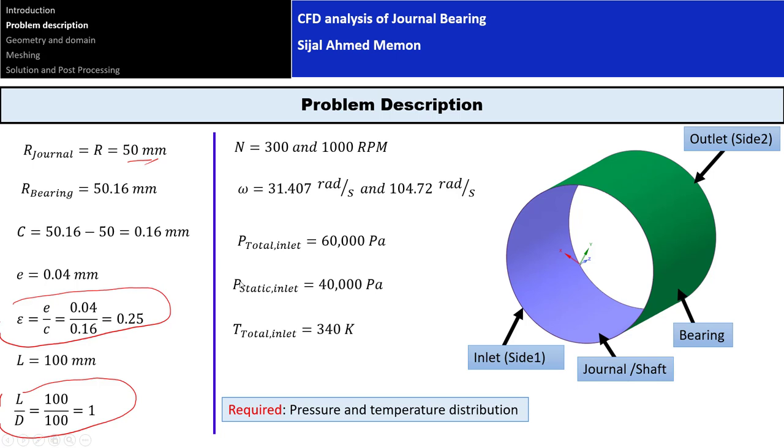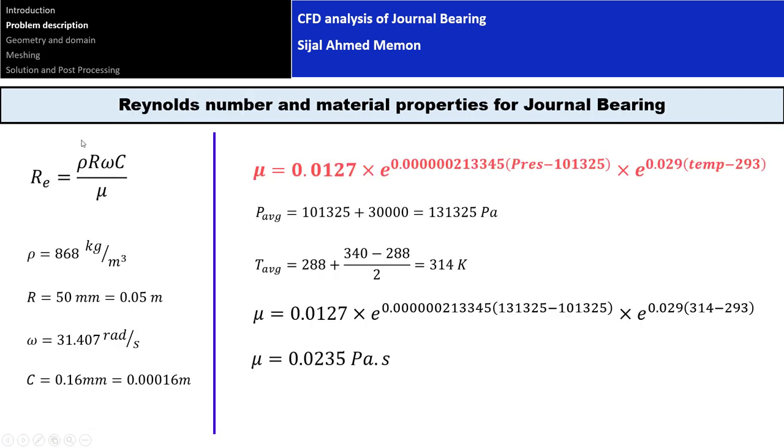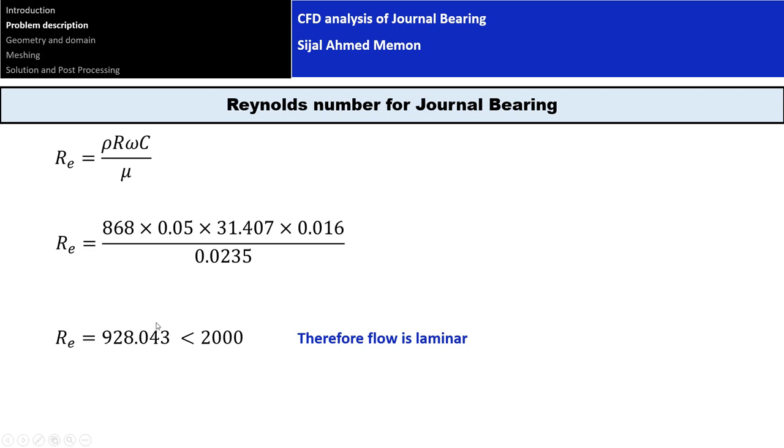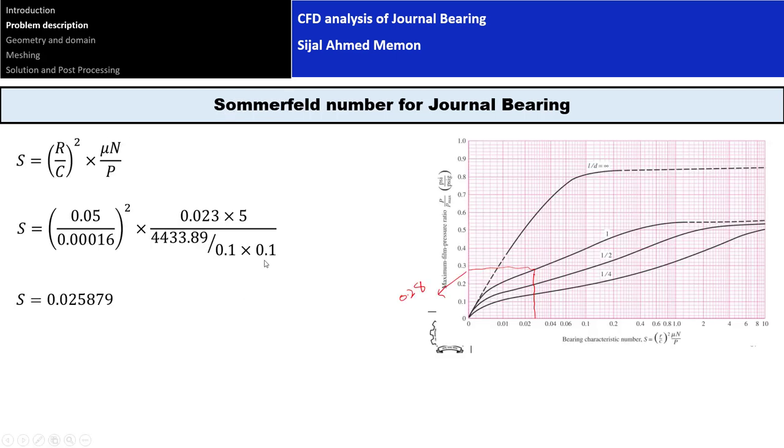These are the parameters for this journal bearing: boundary conditions, inlet pressure, inlet temperature, eccentricity, clearance, eccentric ratio, length, L/D ratio, speed in rpm and radians per second. Reynolds number calculation is also discussed here. Based on this Reynolds number, for example 928, which is less than 2000, the flow is laminar and we use a laminar flow model.